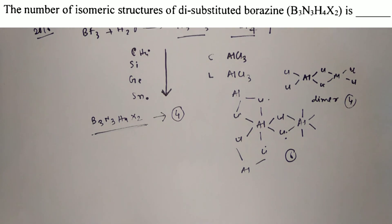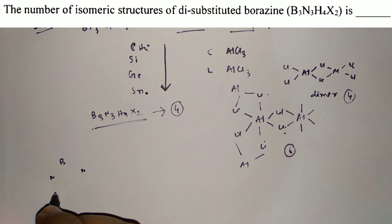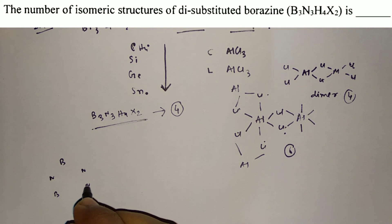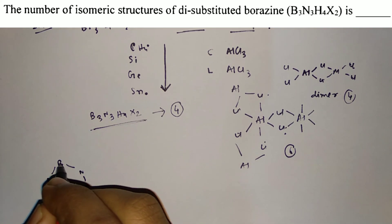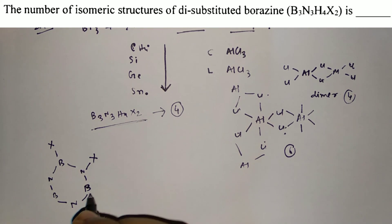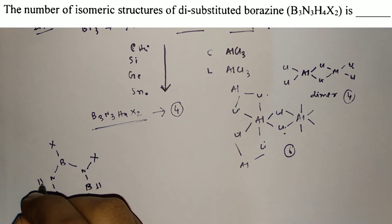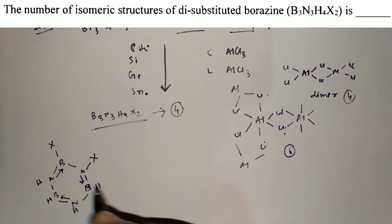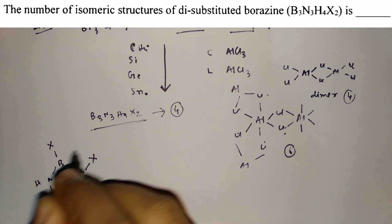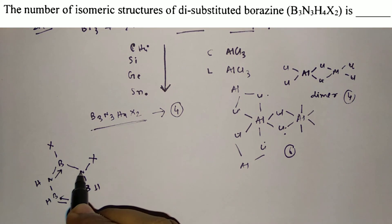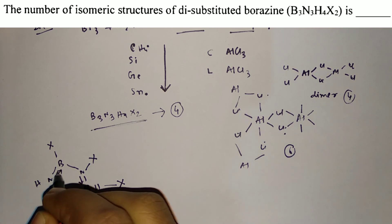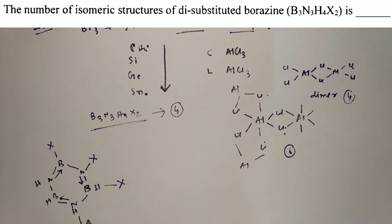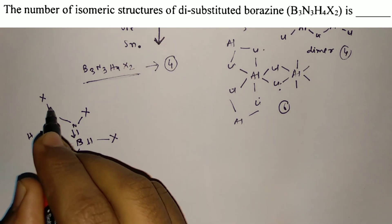Let me show you how. Drawing the borazine ring with alternating B and N atoms: if we place the two X substituents on two boron atoms — there are three possible BB combinations — we get three isomers. Then one more isomer arises when both X atoms are placed on nitrogen atoms. That gives a total of four isomeric structures.